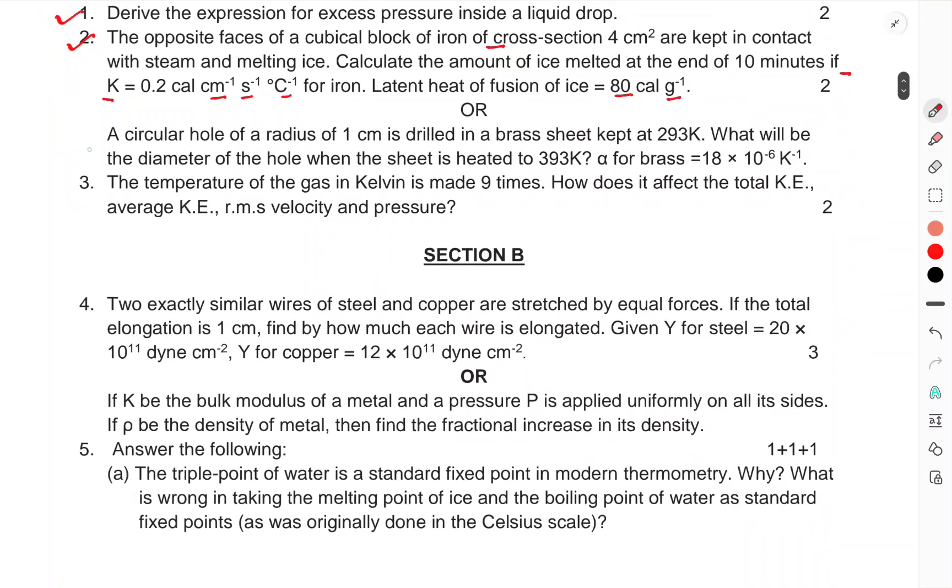Or, a circular hole of radius 1 cm is drilled in a brass sheet kept at 293K. What will be the diameter of the hole when the sheet is heated to 393K? For alpha for brass is 18 × 10⁻⁶ K⁻¹.